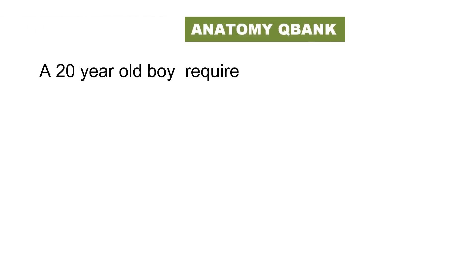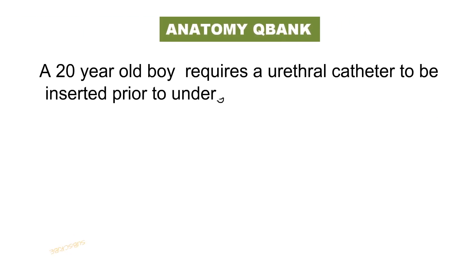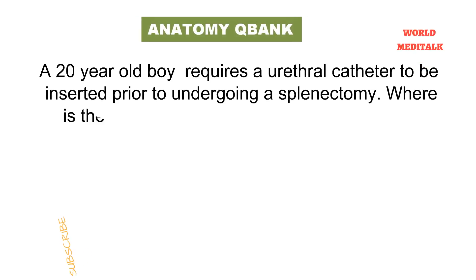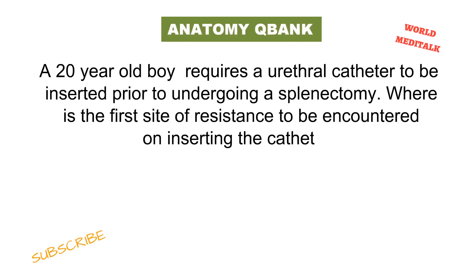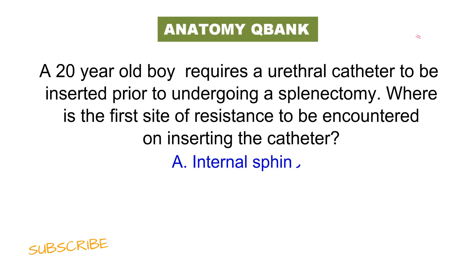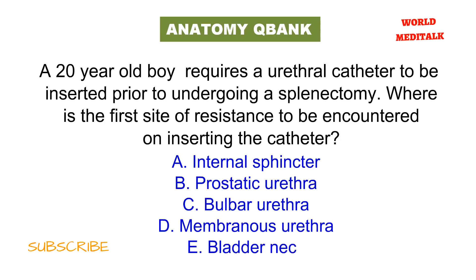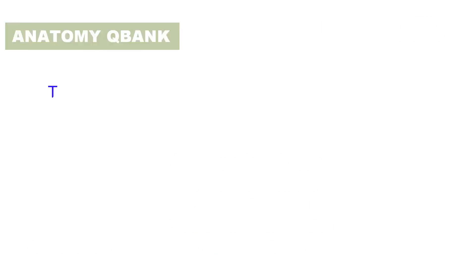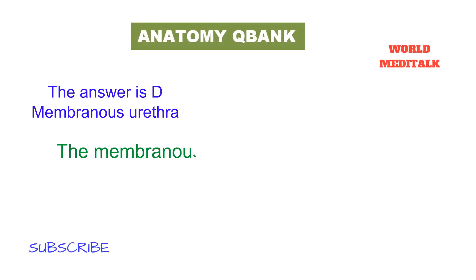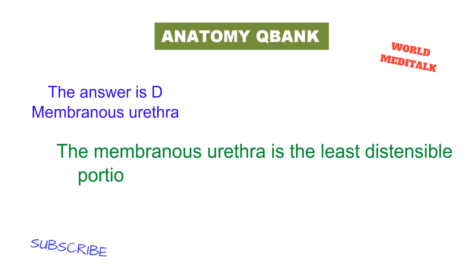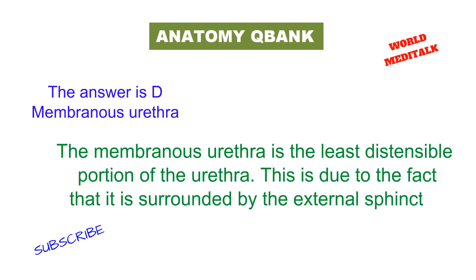A 20-year-old boy requires a urethral catheter to be inserted prior to undergoing a splenectomy. Where is the first site of resistance to be encountered on inserting the catheter? Options include: internal sphincter, prostatic urethra, bulbar urethra, membranous urethra, or bladder neck. The answer is the membranous urethra, as it is the least distensible portion of the urethra due to being surrounded by the external sphincter.